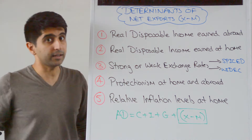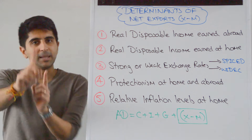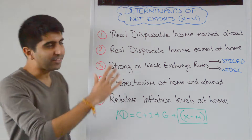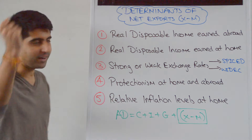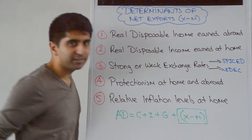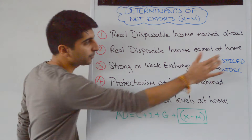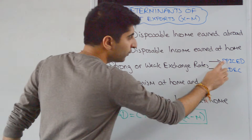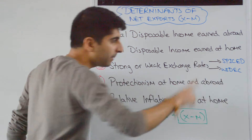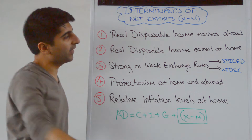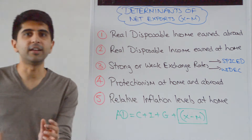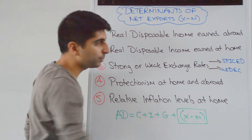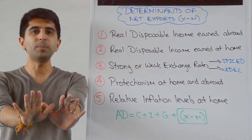Keep things really simple. When you think strong or weak exchange rates, go straight to the mnemonic devices — SPICE and WIDEC. When we think SPICE, we think strong pound, imports cheap, exports dear. And WIDEC is the opposite — weak exchange rate, imports dear, exports cheap.